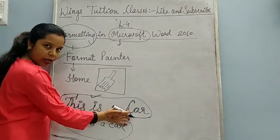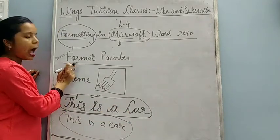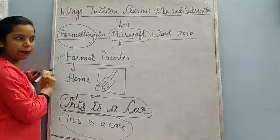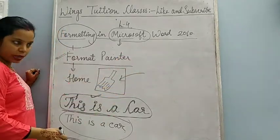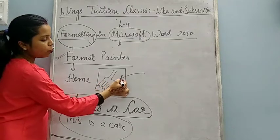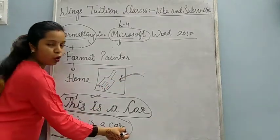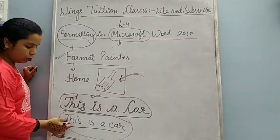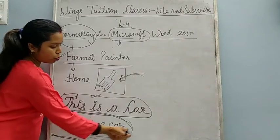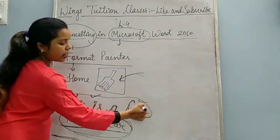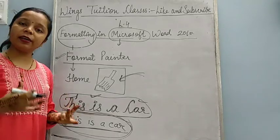You will select this line, then you will click on the Format Painter tool. As soon as you click on Format Painter, the cursor will change into a brush shape. Then you will click where you want to copy — like I want to copy here, so you will click on this. And you will see that this text will also have the same appearance as the first one. So this is the work of Format Painter tool.